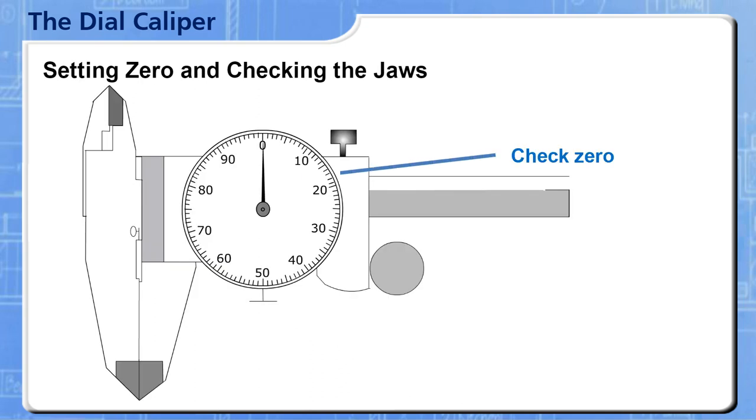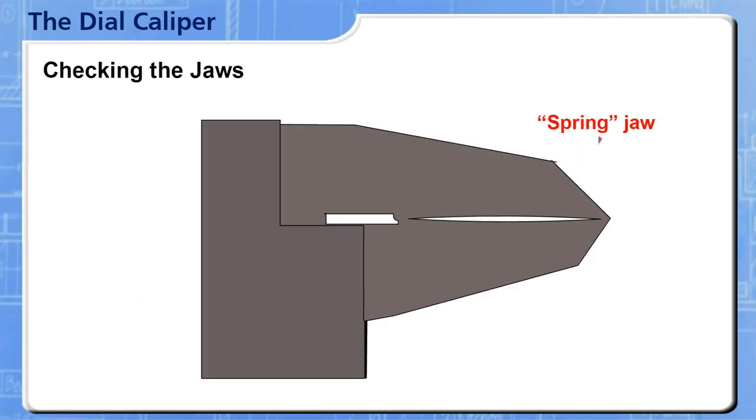Check the zero setting frequently. Clean the jaws and the part before taking a measurement. Over-tightening springs the jaws. Check for this by holding the closed jaws up to the light.